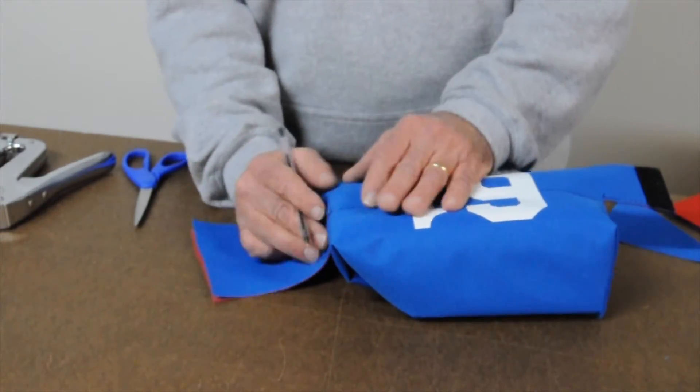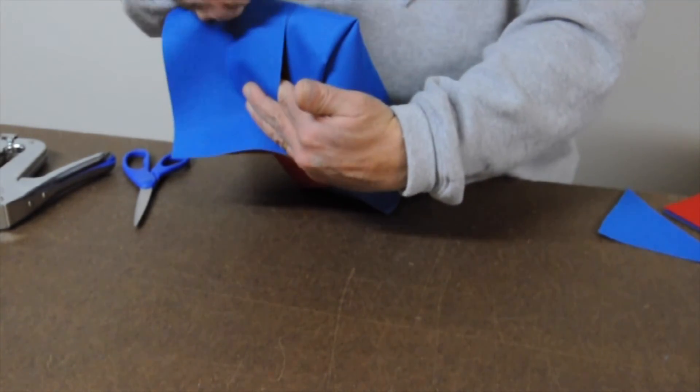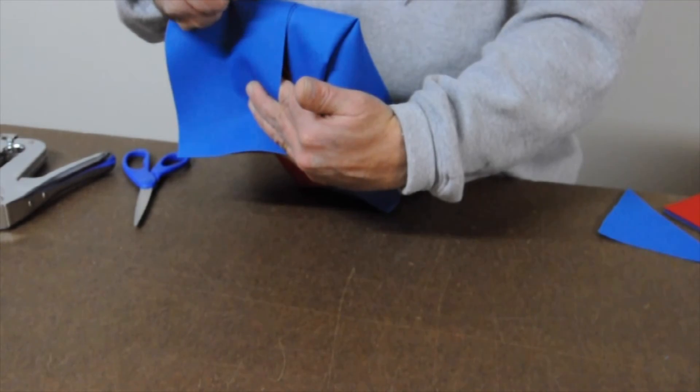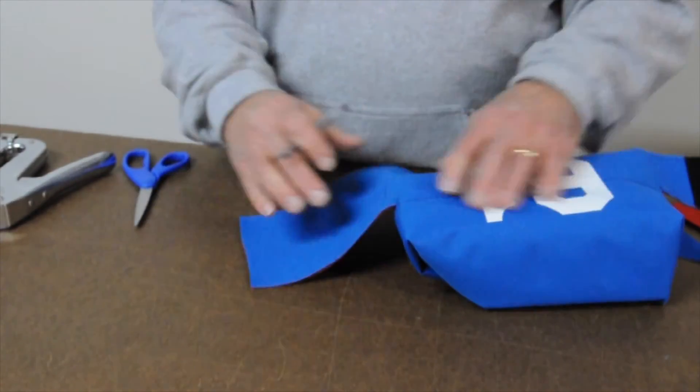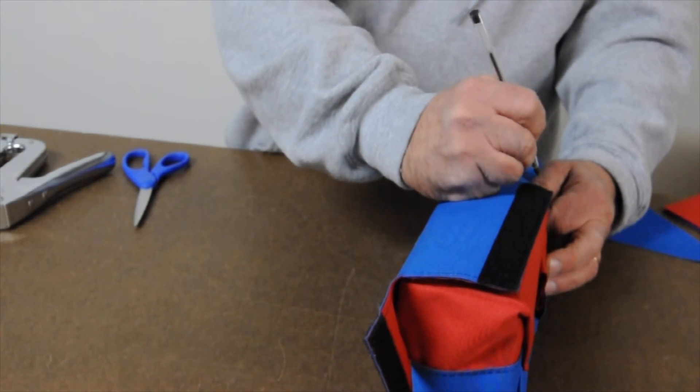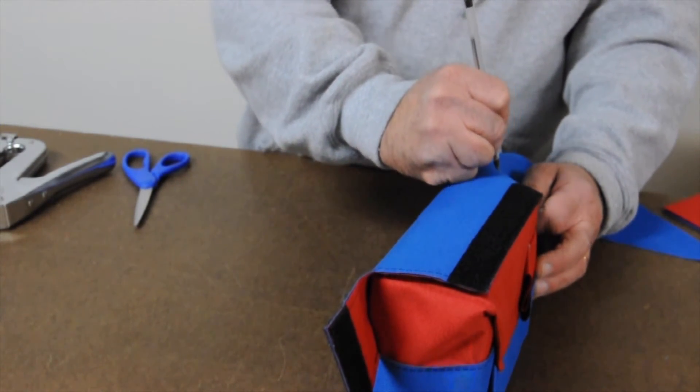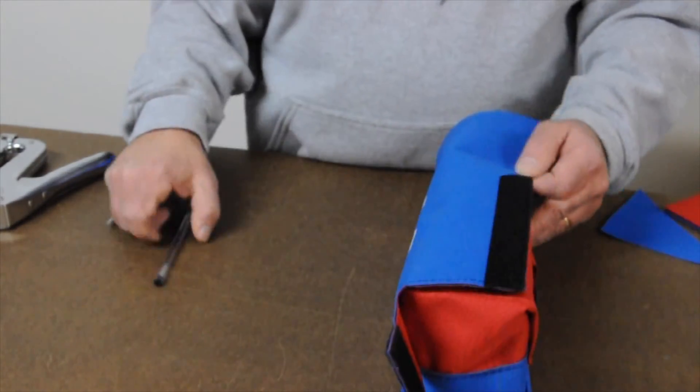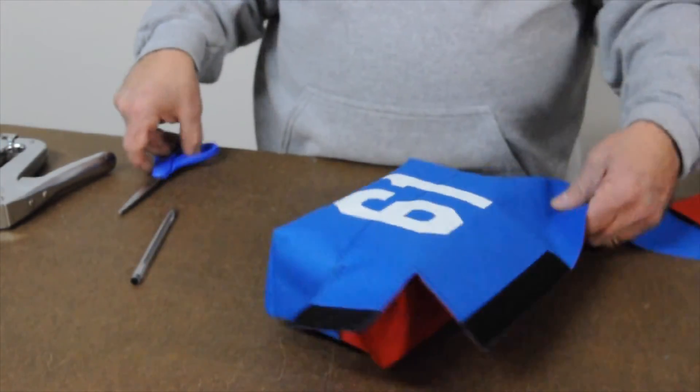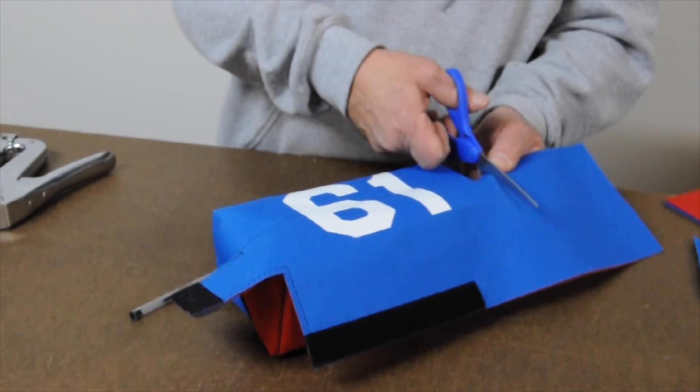Turn the piece back over and draw lines on the excess material following the edge of the bumper foam underneath. Cut along those lines to remove the unnecessary material.